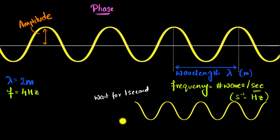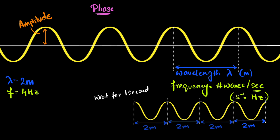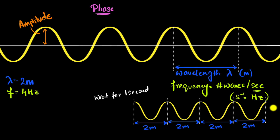Since the wavelength is 2 meters and there are 4 waves, the total distance traveled would be 2 times 4 — that's 8 meters. So in general, if the wavelength is lambda and the frequency is f, there are f number of waves, each of length lambda.